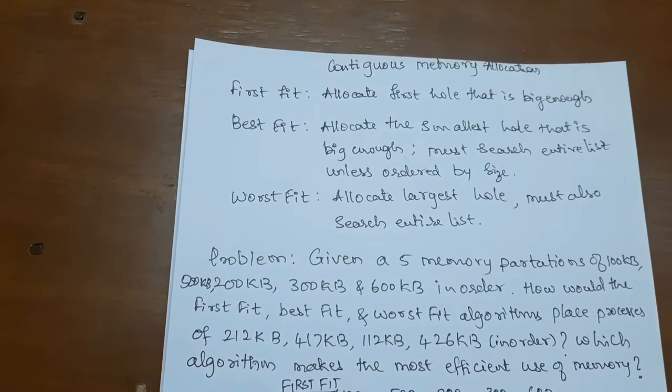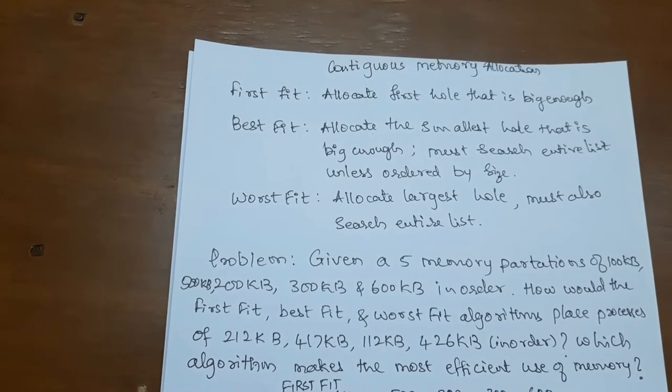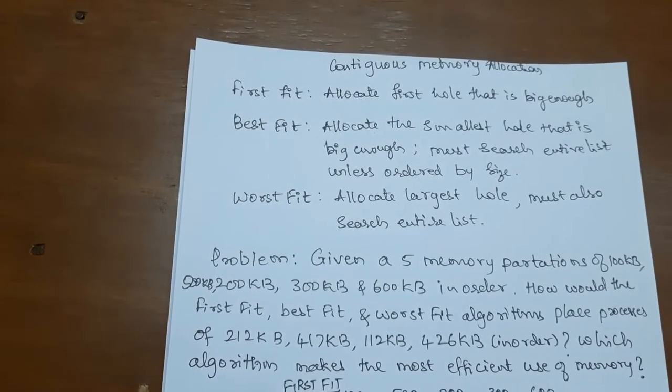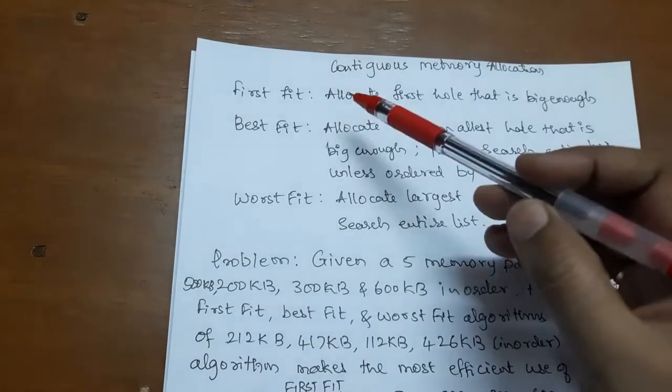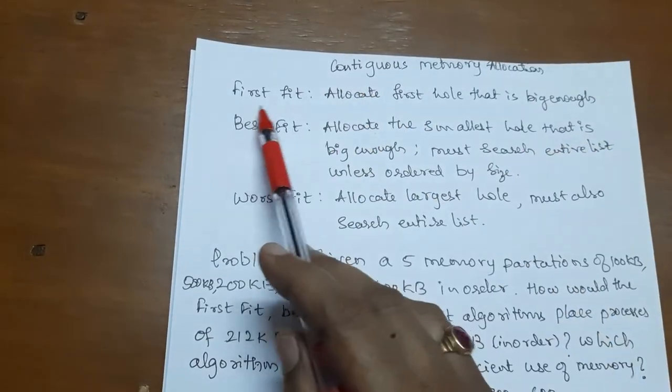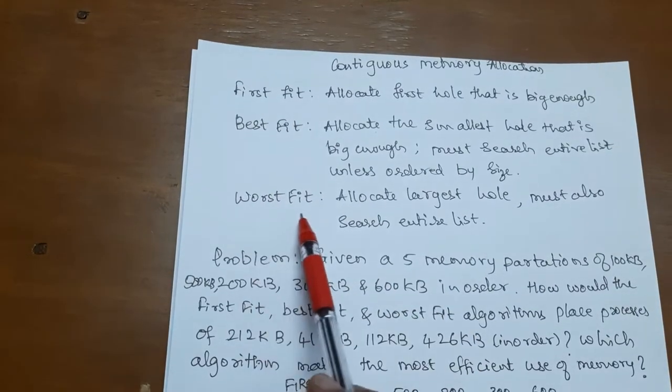Welcome back students. We will discuss contiguous memory allocation. Here we have three methods: first fit, best fit, and worst fit.